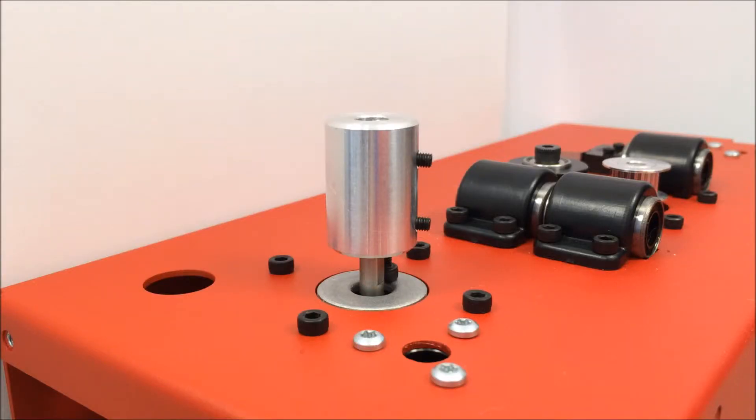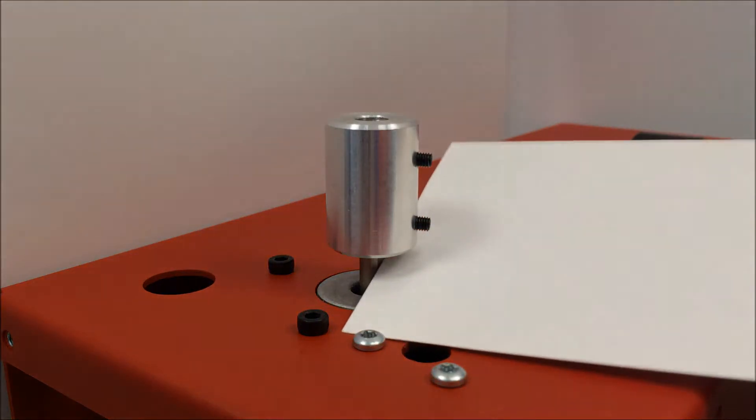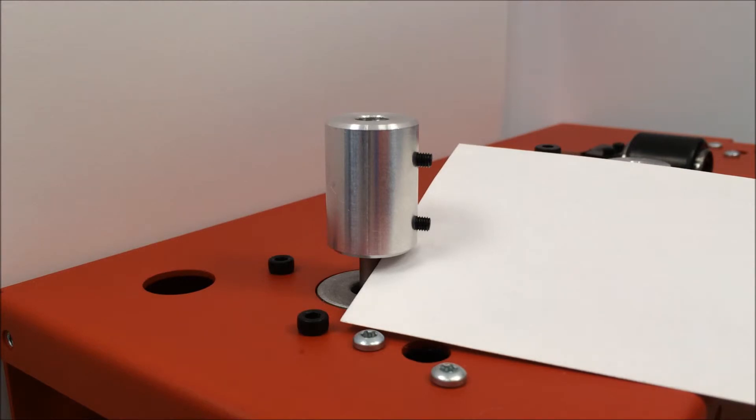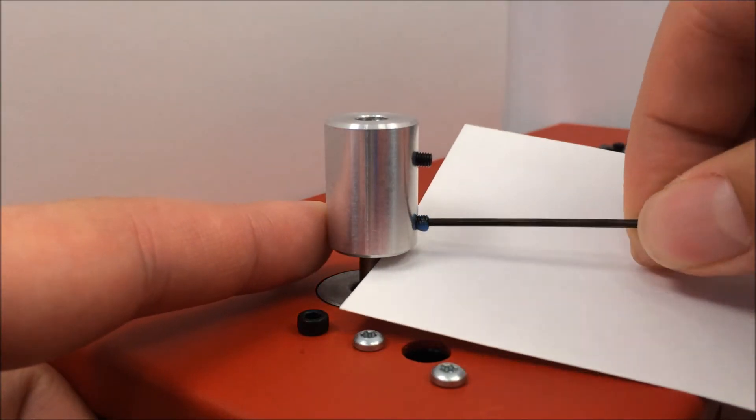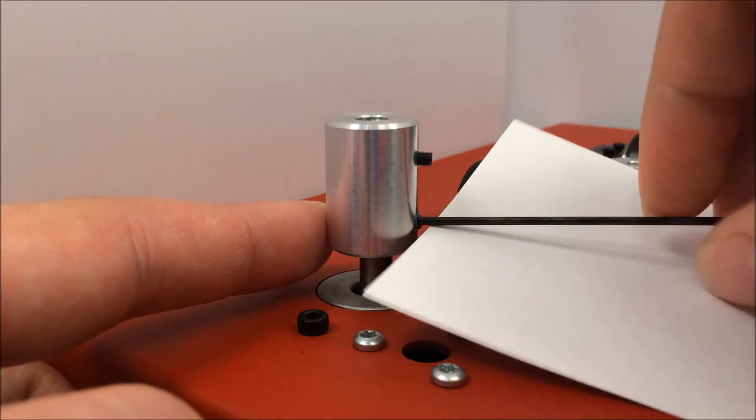At this point, I'm only ready to apply thread locker to the bottom of the two set screws. However, before I do that, I want to place a note card here underneath to catch any drips from the thread locker. I have the screw sufficiently exposed so that I can apply the thread locker without removing it. However, you may choose to remove it, apply thread locker, and then put it in place.